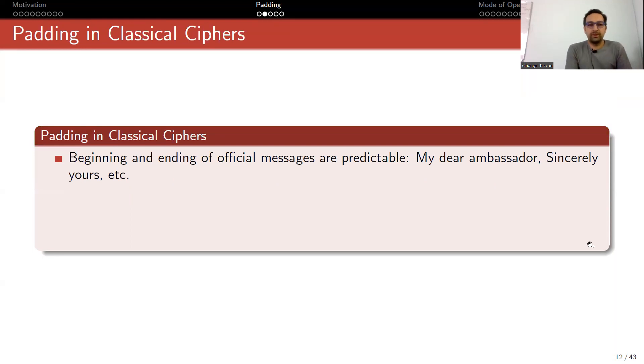Before moving on, let me give some padding examples in classical ciphers. This padding problem is not only related to modern ciphers. Recall the classical ciphers where you use pen and papers. Beginning and ending of official messages are predictable. They may be starting like 'My dear ambassador' or they may be ending like 'Sincerely yours'. So if you capture the ciphertext, you can also guess the beginning and ending of the plaintext. This way you can find weaknesses in the ciphers and break it. To avoid this problem, what people did in the past is as follows: